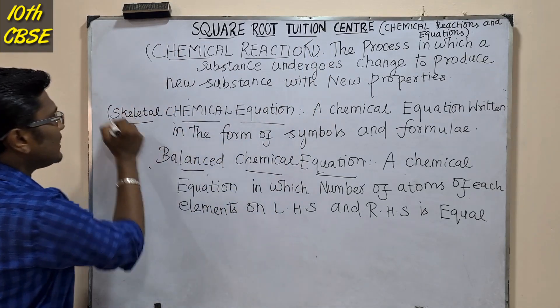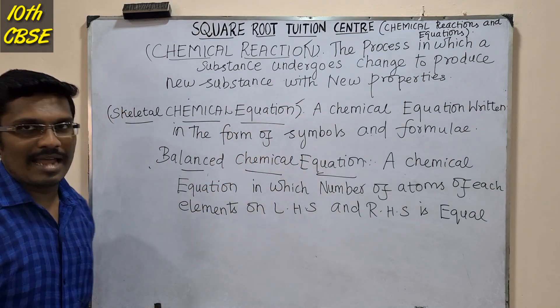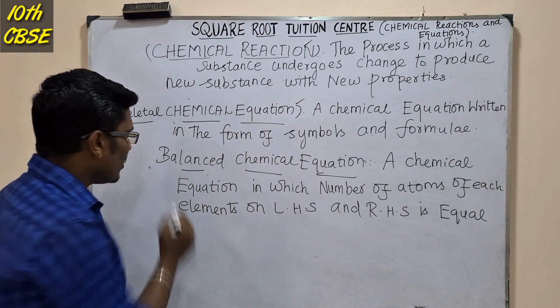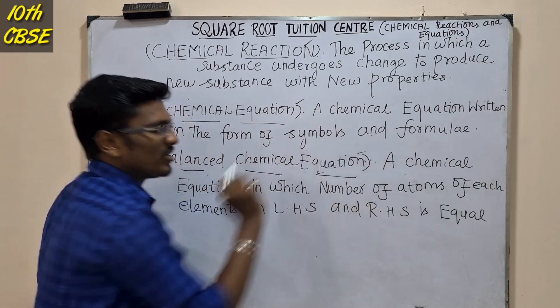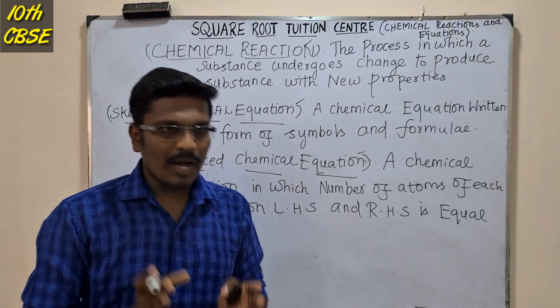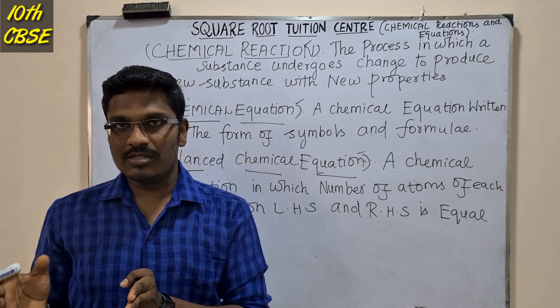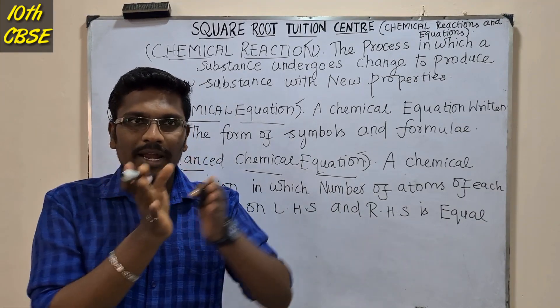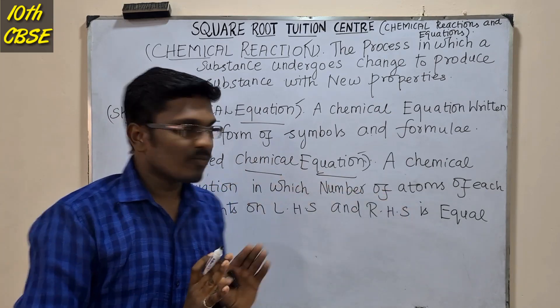Here are two things: one is the skeletal chemical equation and the second one is the balanced chemical equation. The skeletal equation has the reactants on the LHS — that is the left hand side — and the products on the RHS — that is the right hand side.